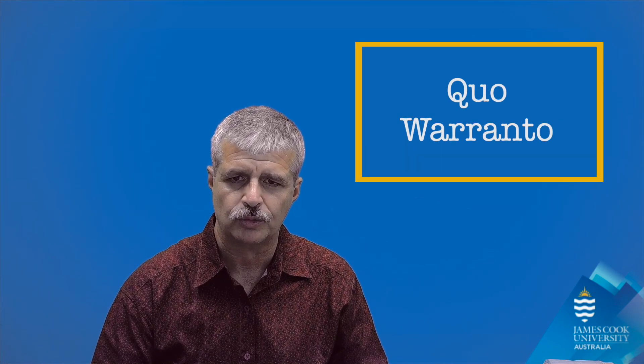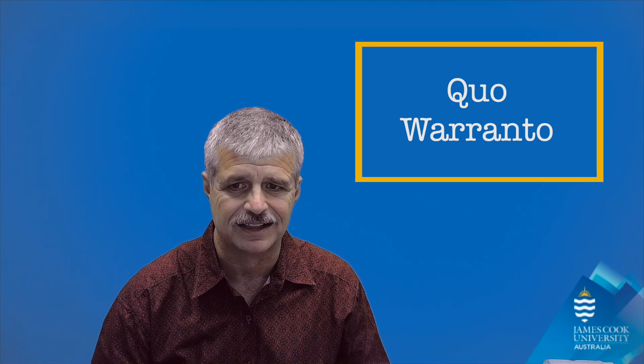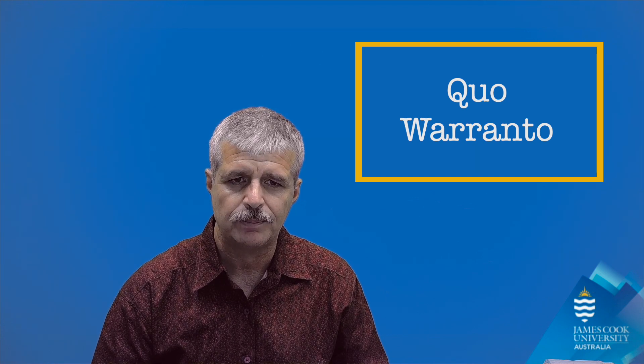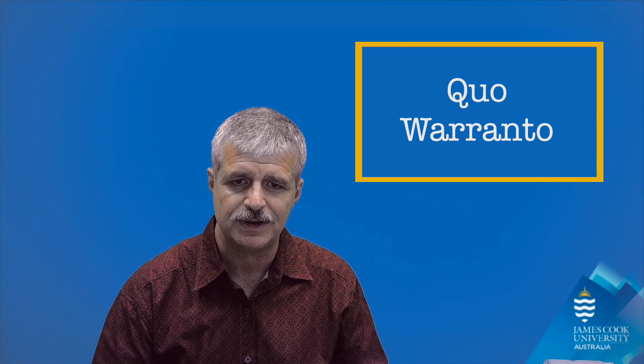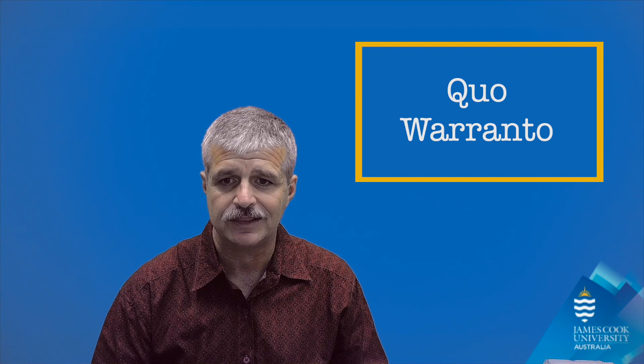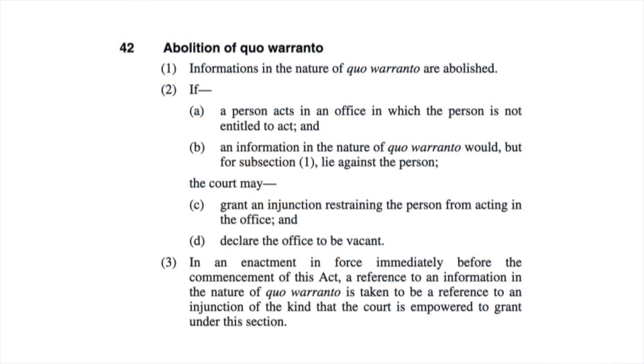Finally, I don't want to spend a lot of time on the last of these writs, quo warranto, but it's important that you know it exists. Quo warranto is Latin for by what warrant or by what authority. It was used when a person didn't want to challenge the decision exactly, but rather they wanted to challenge the authority of the person making the decision. To this day, as we'll soon discover in this course, one of the key questions we have to ask when assessing an administrative decision is whether the person who made the decision actually had the authority to do so. If they did not, then the decision can be successfully challenged. In Queensland, the writ of quo warranto has formally been abolished by Section 42 of the Judicial Review Act 1991. The High Court still does have a procedure for applying for a writ of quo warranto, limited to circumstances in which a person is falsely claiming to be a Commonwealth officer, but it hasn't been relied on for many years.